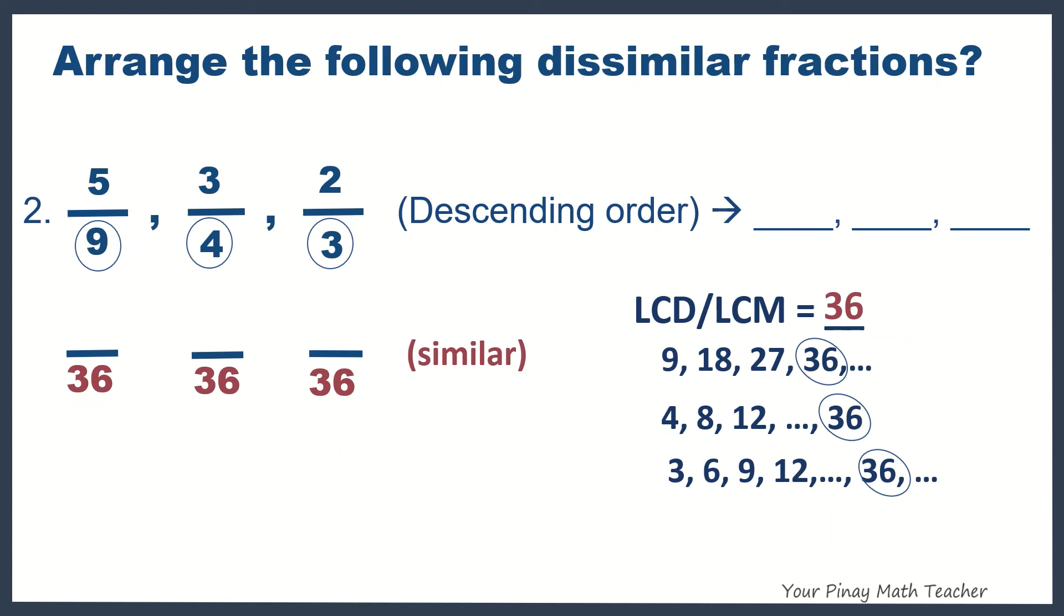So, look at the given fractions above. What will you multiply to 9 in 5 ninths? We have 4. Do the same with 5. In 3 fourths, we have to multiply 4 by 9 to get 36. In 2 thirds, we have to multiply 3 by 12 to get 36.